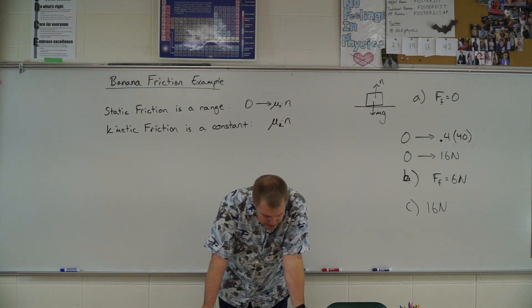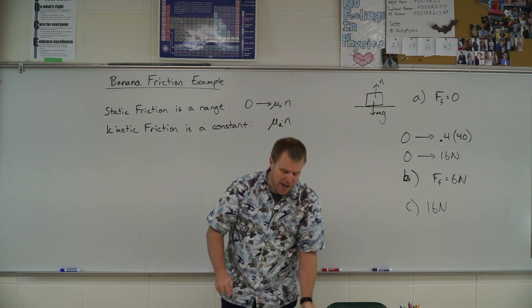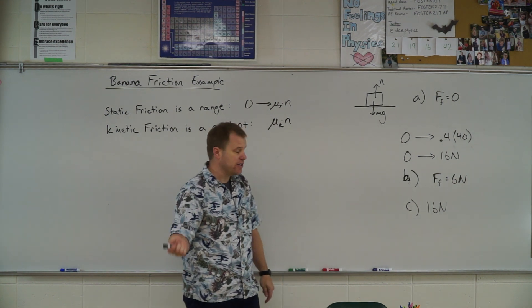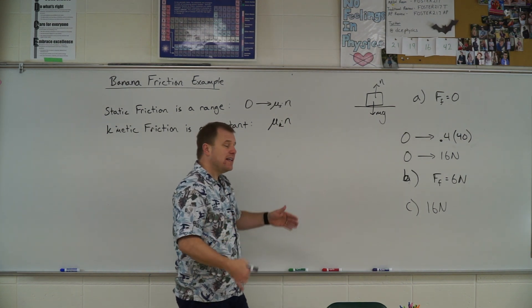Part D says, what is the minimum horizontal force the monkey must apply to keep the box moving at a constant velocity? Constant velocity, so acceleration is zero. Once it is moving. Alright, so now once I get it moving, my force of friction changes.